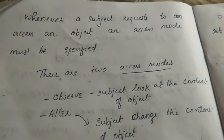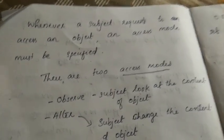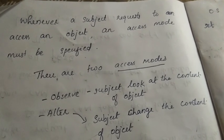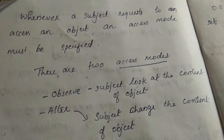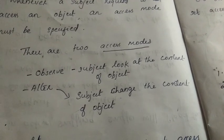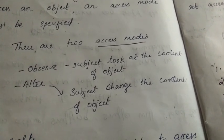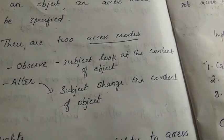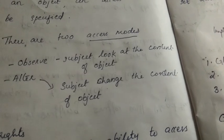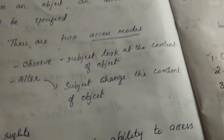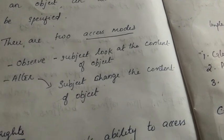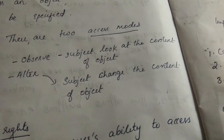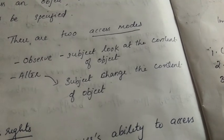Whenever a subject requests to access an object, an access mode must be specified. There are two access modes: observe and alter. Observe means the subject looks at the content of the object. Alter means the subject changes the content of the object, which is a write operation.